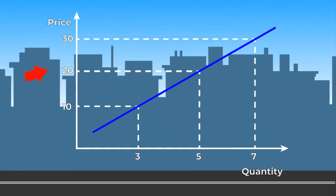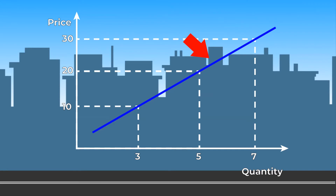You'll see the cost — in this case dollars — on the y-axis, and quantity (boxes) on the x-axis. The supply curve is upward sloping, starting with a point at ten dollars supplying three boxes, and ending at the point at thirty dollars where they will supply seven boxes.